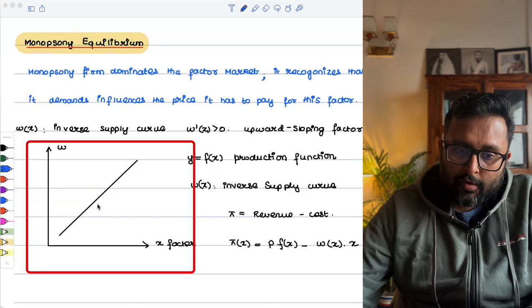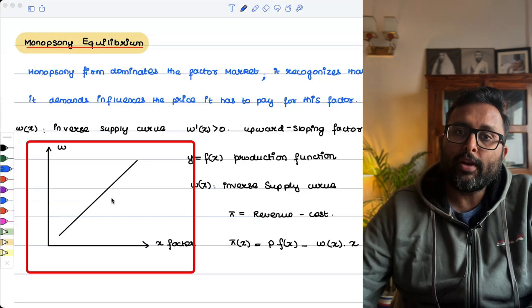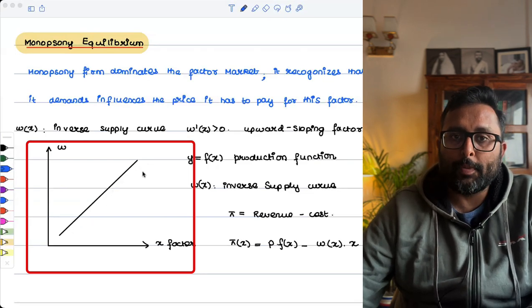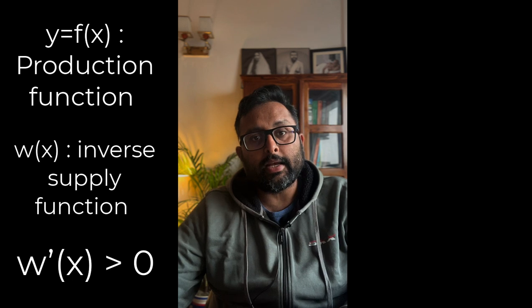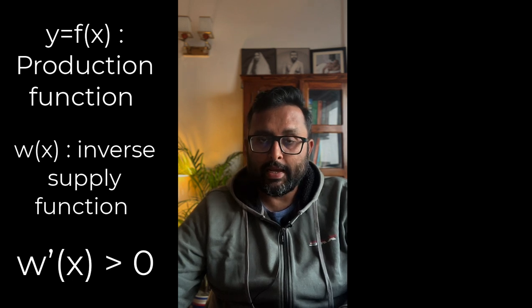You will be supplying more labor only when I am going to give you higher wages. So the supply curve for labor or supply curve for any input is an upward sloping curve in the monopsony case. Y equals FX is the production function. WX is the inverse supply function. X is the input.